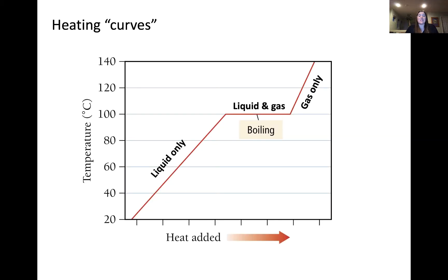We can describe this process going from liquid to gas using what's called a heating curve. The y-axis shows temperature, and the x-axis shows the amount of heat added. Initially, we start out with only the liquid substance. As we add more and more heat, this increases the kinetic energy of the molecules because the temperature is increasing. Once we reach a certain point, the liquid and gas are both present in equilibrium — this is referred to as the boiling point. Temperature is constant even as more heat is added, because this heat serves to disrupt the intermolecular forces in the liquid molecules, transitioning them into the gas phase.